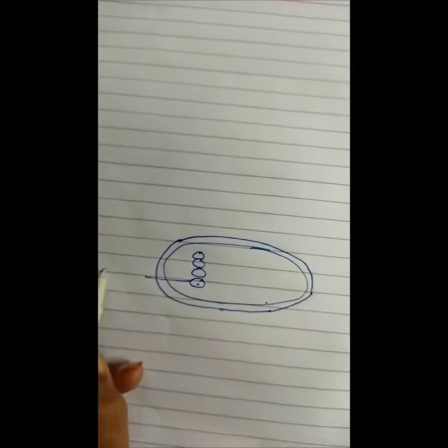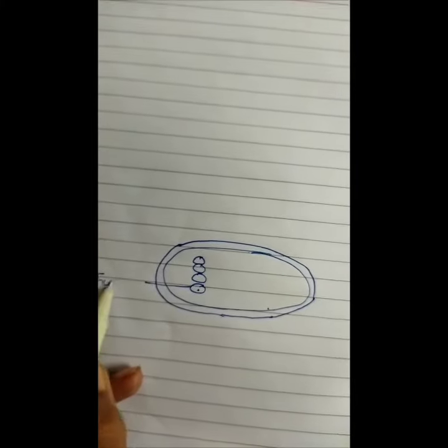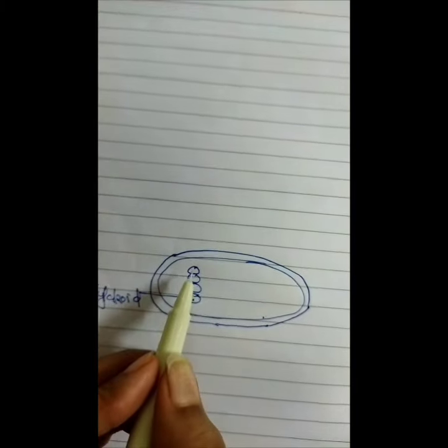This is known as thylakoid, and it is stacked one above the other.